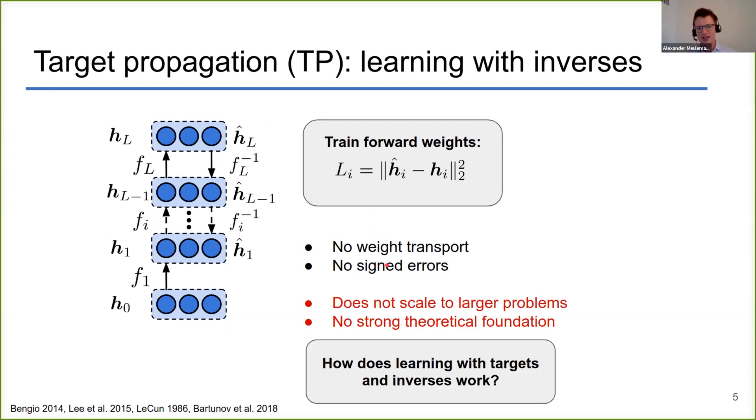Target propagation is considered more biologically plausible because it has no weight transport and no signed error signals. However, Bartunov and colleagues showed that it does not scale well to large problems and there's no strong theoretical foundation that can be used to provide new insights to improve target propagation for these more difficult datasets.